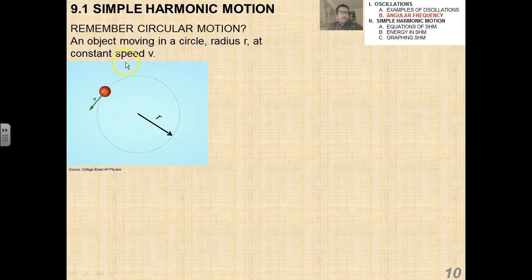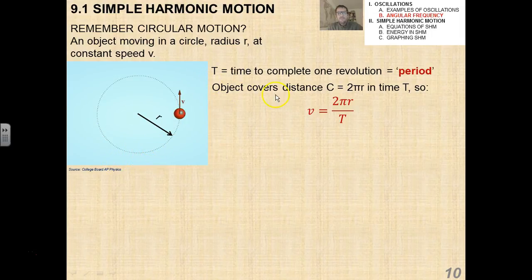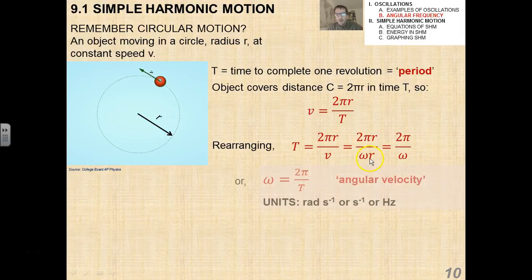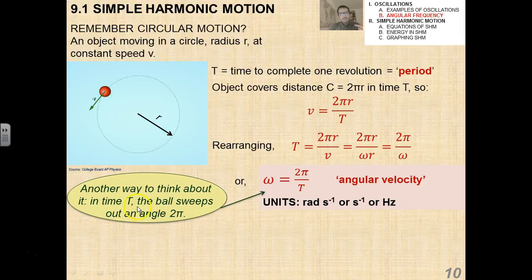Now, if you remember circular motion, we had an object moving in a circle of radius r at a constant speed v. And we said that the time to complete one revolution, we call it the period, and that variable is capital T. If this object, which in this case is a little red sphere, if it covers a distance c equals 2πr, which is the circumference in a time T, then v equals 2πr over T. And if I rearrange this, I have T equals 2πr over v, or 2πr over ωr. Where I'm introducing this new term, we've already been through this. This is called the angular velocity. It's the number of radians that the object subtends or extends in one complete period, right? So the units would be radians per second, or usually we just say hertz, or per second, it's angular velocity. Another way to think about it is that in a time capital T, that's the angle that the ball actually sweeps out, right?